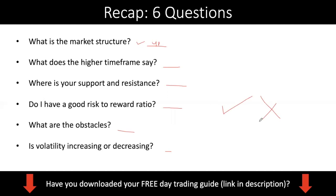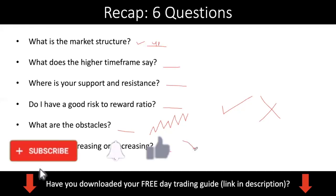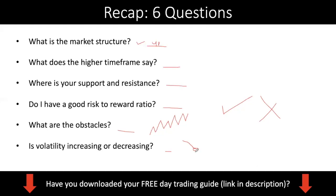Just a brief recap: ask yourself what is the market structure — is it an uptrend, downtrend, or consolidation? What does the higher timeframe say — is your trade in alignment with it? Where are your support and resistance levels — plot key levels where price has reacted previously. What is your risk-to-reward — if you risk 30 pips to make 60 pips, that's a 1:2 ratio. What are the obstacles, since price moves in a series of higher highs and higher lows, not a straight line. Finally, is volatility increasing or decreasing — if the ATR is sloping down and the range is tightening, the market is consolidating and it's better to close your position.